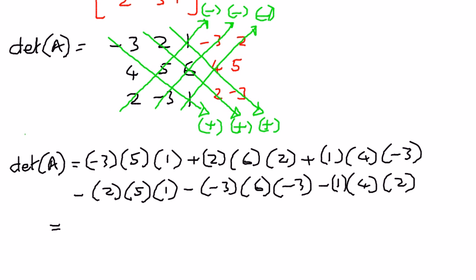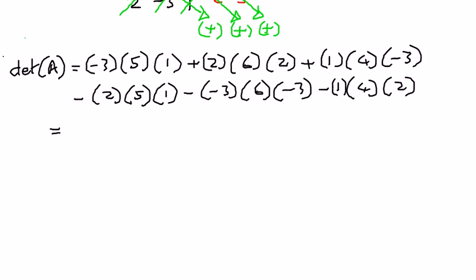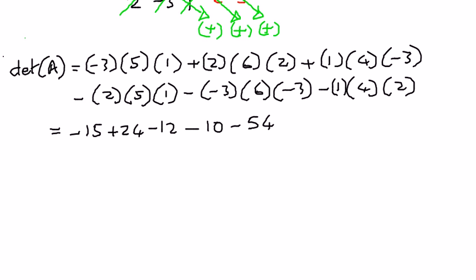Now it is just a matter of simplifying the math. Negative 3 times 5 times 1 is negative 15. Then 2 times 6 is 12, and 12 times 2 is 24, plus 24. Then 1 times 4 is 4, and 4 times negative 3 is negative 12. Then minus 2 times 5 is negative 10. Negative times negative gives positive, so that term gives negative 54. And then minus 1 times 4 times 2 gives negative 8. When we simplify all of this, the determinant of A is equal to negative 75.